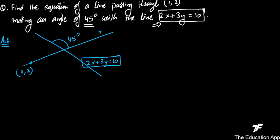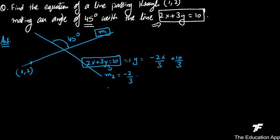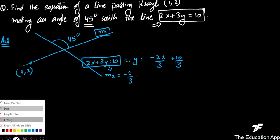Let us say the required line L1 has slope m1, and the given line L2 has slope m2. Converting 2x + 3y = 10 to slope-intercept form: y = -2x/3 + 10/3, so m2 = -2/3.